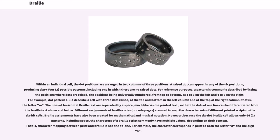The lines of horizontal Braille text are separated by a space, much like visible printed text, so that the dots of one line can be differentiated from Braille text above and below. Different assignments of Braille codes, or code pages, are used to map the character sets of different printed scripts to the six-bit cells. Braille assignments have also been created for mathematical and musical notation. However, because the six-dot Braille cell allows only 64 patterns including space, the characters of a Braille script commonly have multiple values depending on their context; that is, character mapping between print and Braille is not one-to-one. For example, one character corresponds in print to both the letter D and the digit 4.